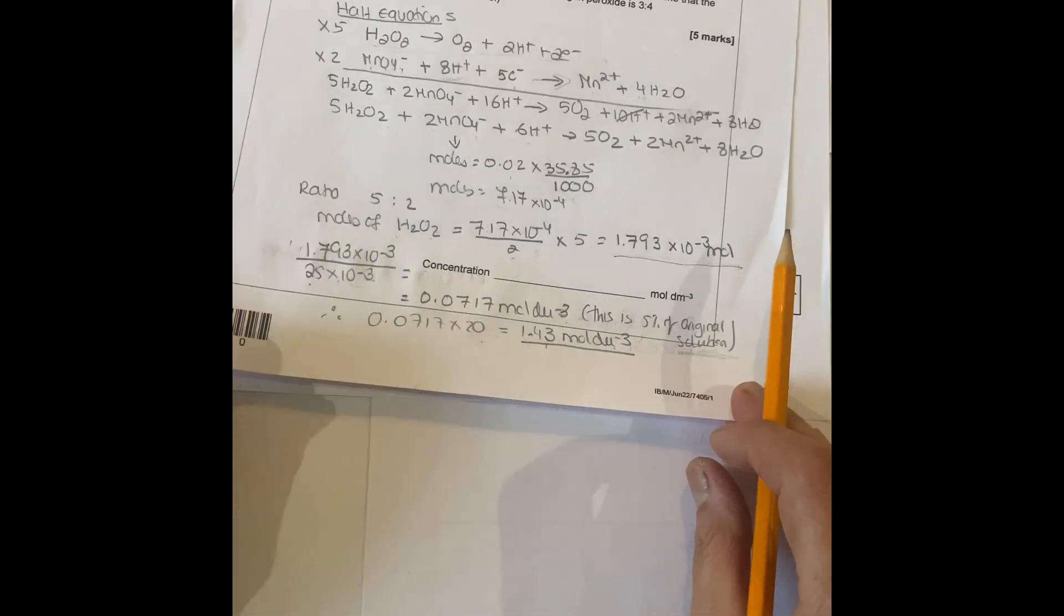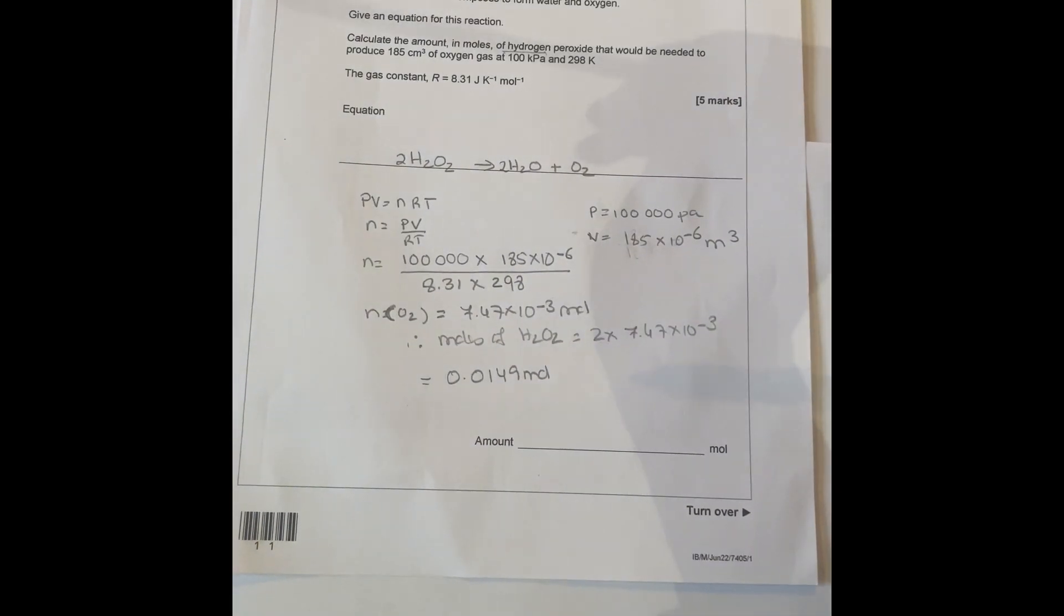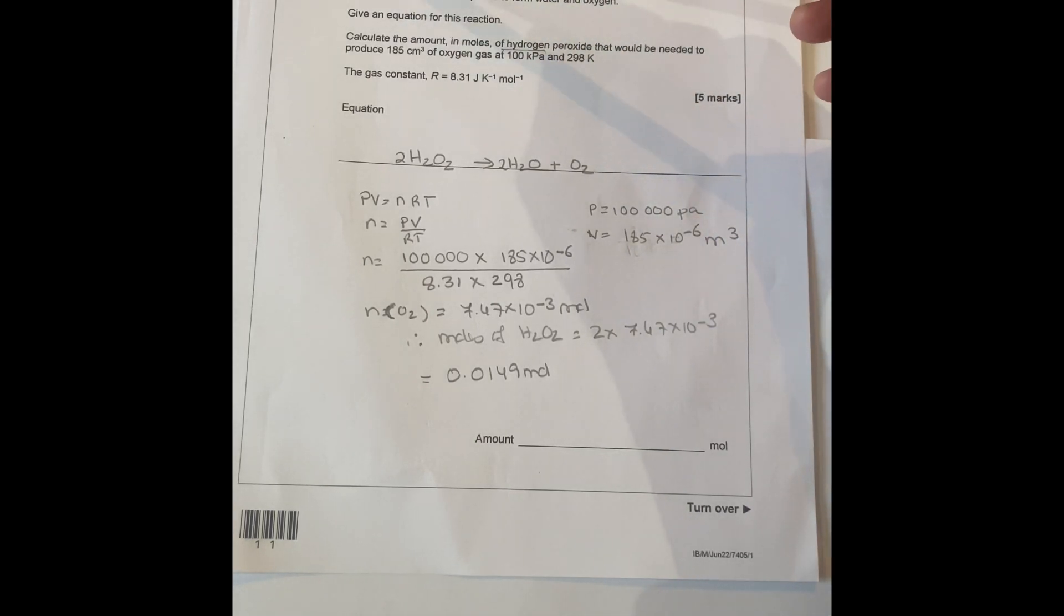Question 3.2 says state why the indicator is not added to the titration. Because KMnO4 is a self-indicator because you've got color. Give the oxidation state of oxygen in hydrogen peroxide, it's going to be minus one.